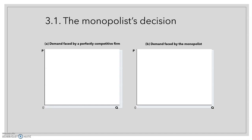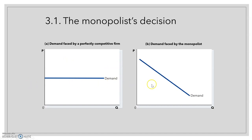This slide shows on the left the individual demand faced by a competitive firm. In perfect competition, as we saw in the last chapter, this is a horizontal line that coincides with the price, so demand equals price, equals average revenue, equals marginal revenue. The graph on the right shows the individual demand faced by a monopoly, which has a downward slope. This means that when the price increases, the quantity demanded is going to decrease — this is related to the law of demand.